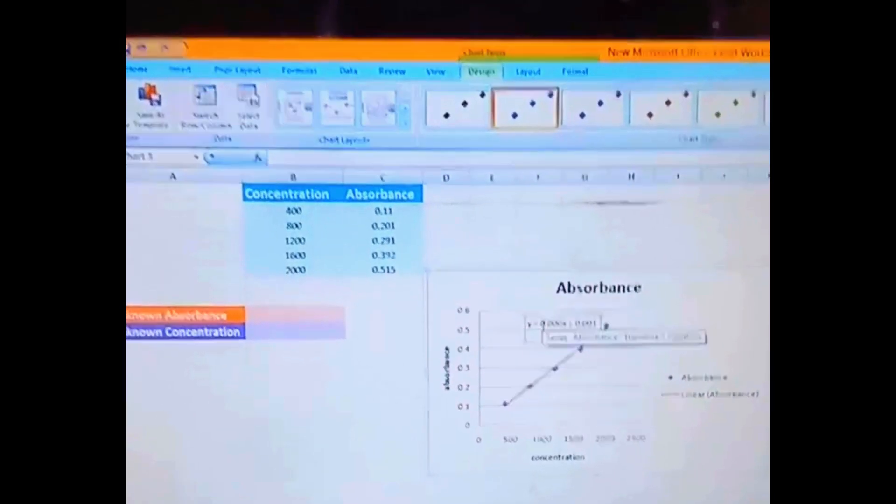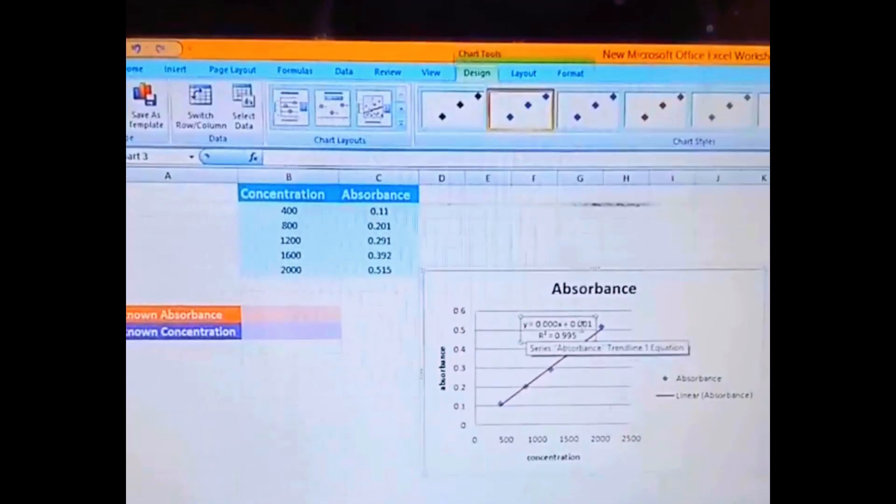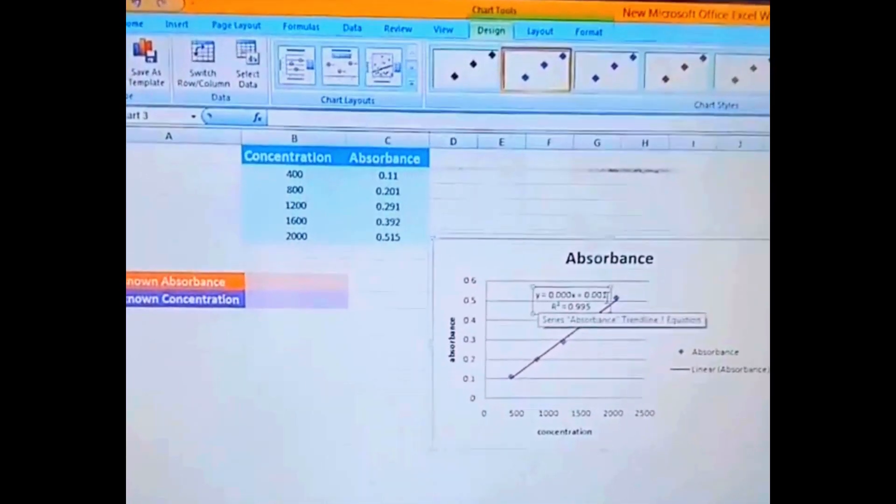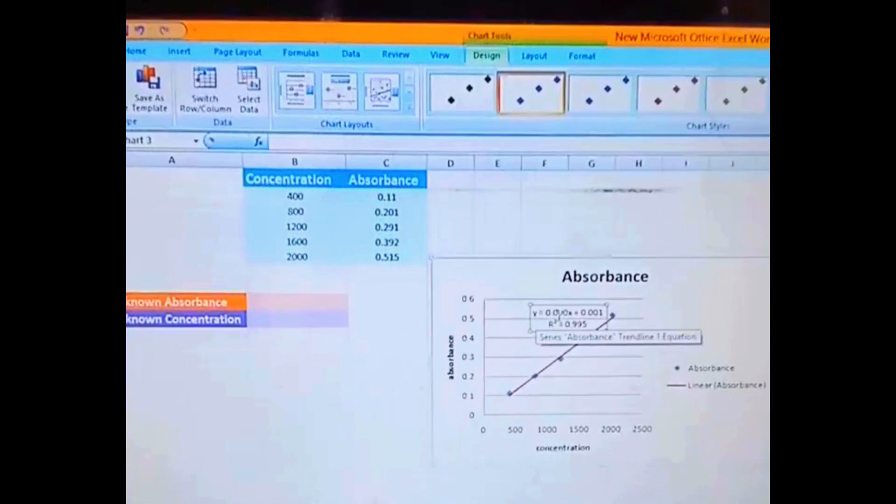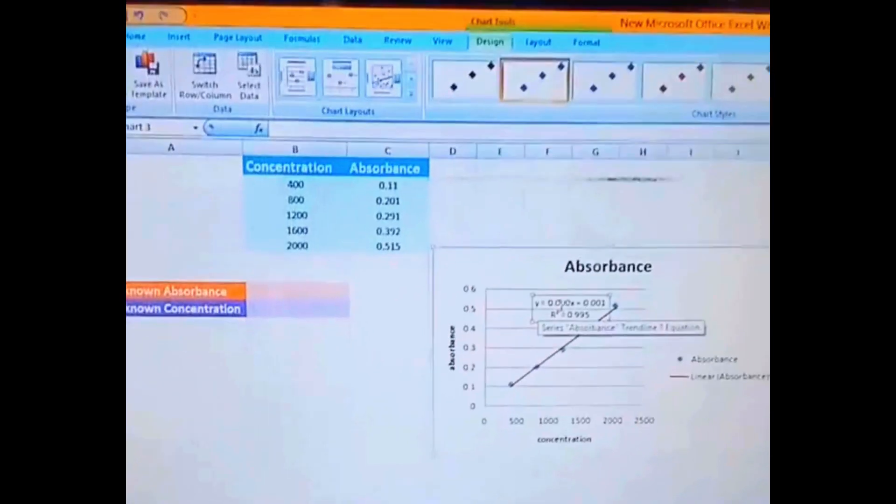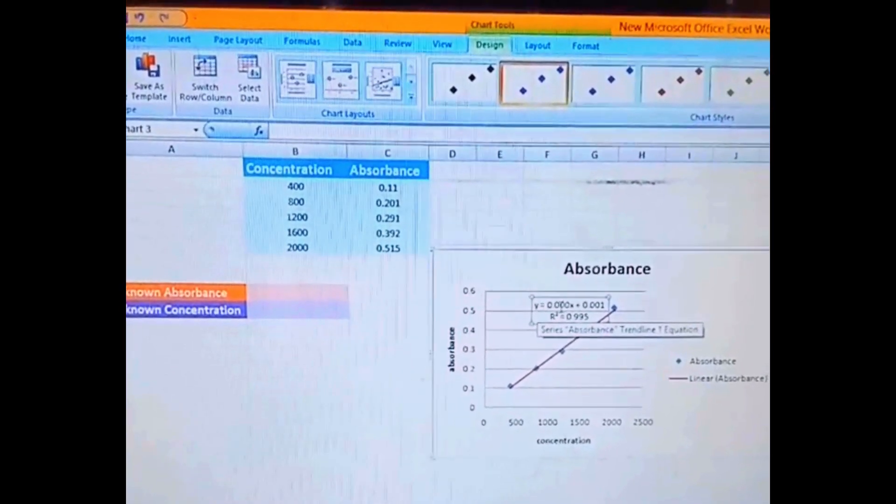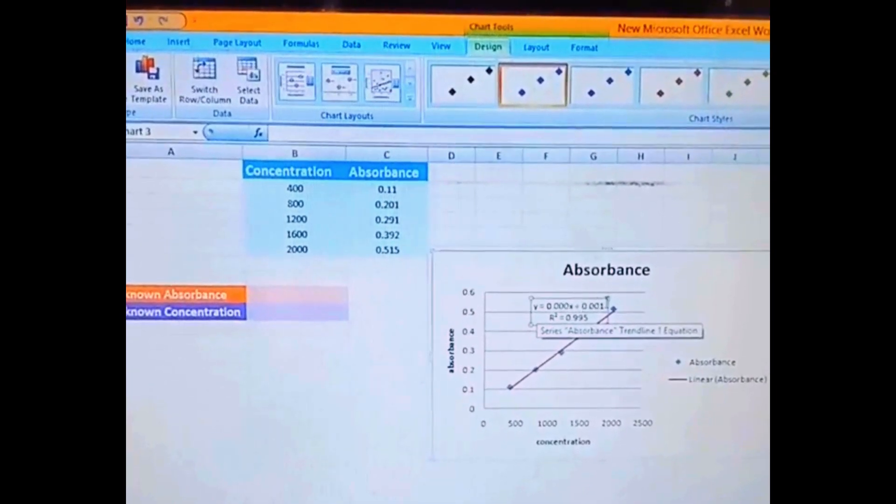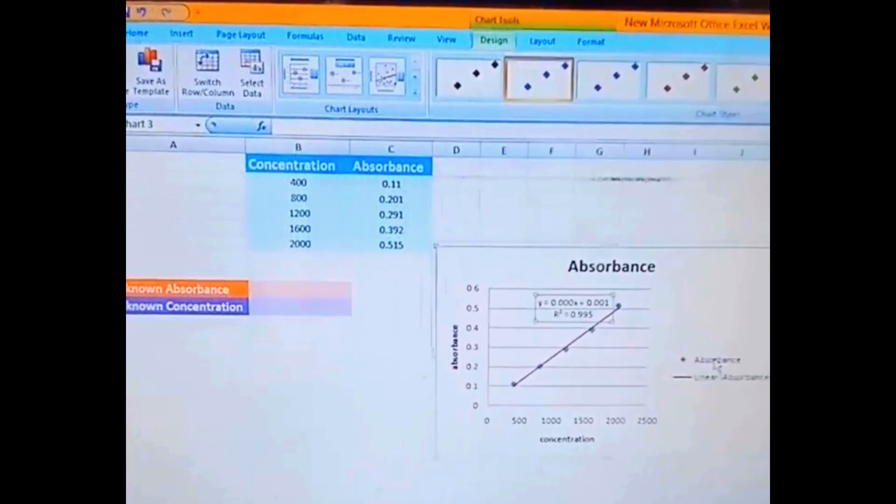And here I would like to mention that we know y equals mx plus c. The formula is here, or we can say ax plus b. So this value is the slope value and this one is the intercept value.